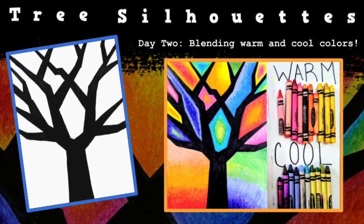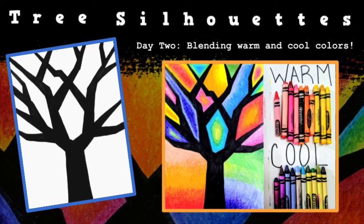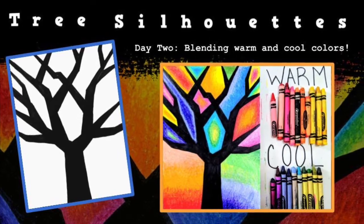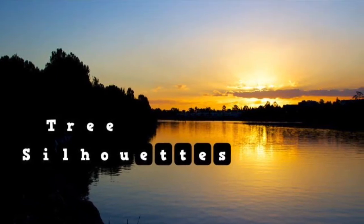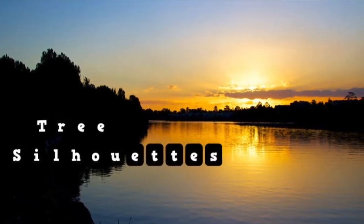Today we're going to start coloring the background of our tree silhouettes. Remember, a silhouette is a dark object against a brightly lit background. We're most likely to see these at sunset and sunrise.